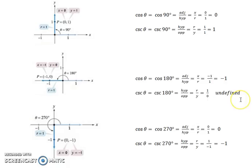For 270, your point is at 0, negative 1. Your r is still 1. So x over r would be 0 over 1, which is 0. That's allowed. And then for cosecant, the reciprocal of the sine would be r over y, which is 1 over negative 1, or just negative 1.